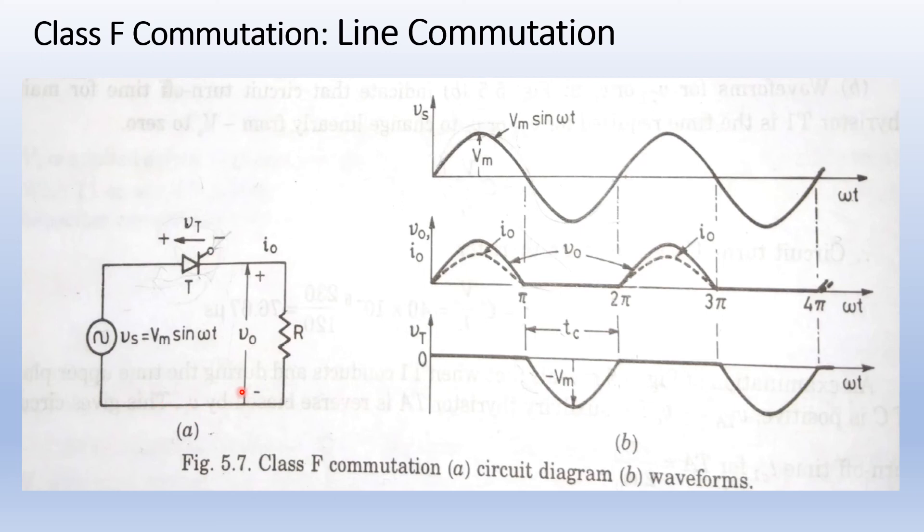A single phase half wave controlled converter employing line commutation is shown in this figure. The thyristor T is fired at firing angle equal to zero degree. That is when omega t equal to zero and Vs is equal to zero.